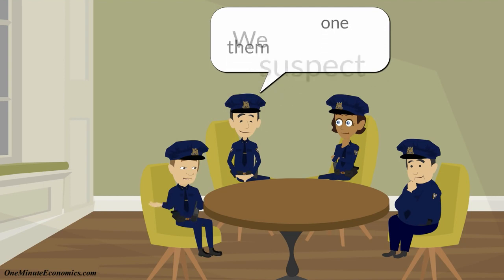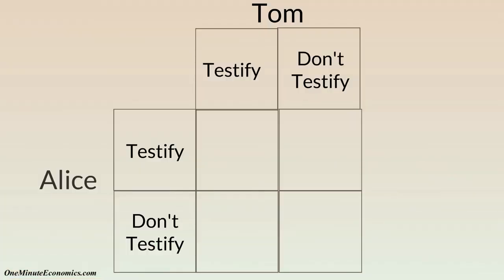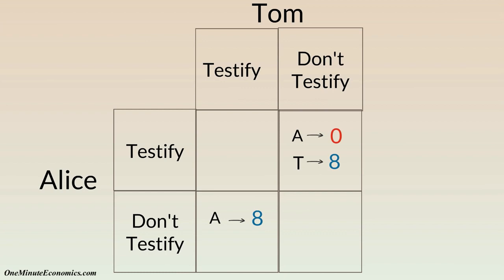However, let's also assume the police expects one of them was involved in a more serious offense — stealing valuable paintings from a museum. Alice is offered a deal by the police: if she testifies against Tom for the more serious crime and Tom doesn't testify against her, she gets zero jail time, but Tom gets eight years. Tom gets the same offer. If none of them testifies, each person only gets one year in jail. If both of them testify, they get three years each.